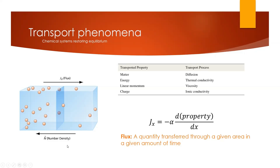For example, if the number density is our property and it were even, there would be no change in number density with respect to position. So dn/dx would be zero and there would be no flux. However, if there is some change, there is going to be some flux. The negative sign denotes the fact that the flux is opposing the number density — the flux is negative if the gradient in number density is positive, and vice versa.